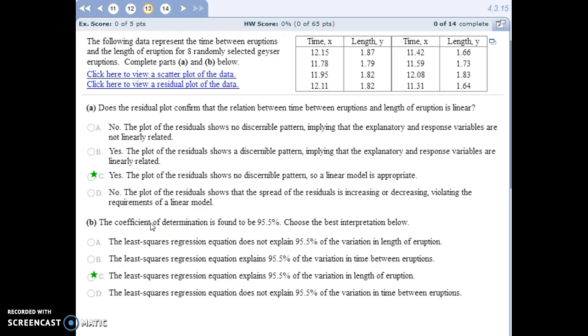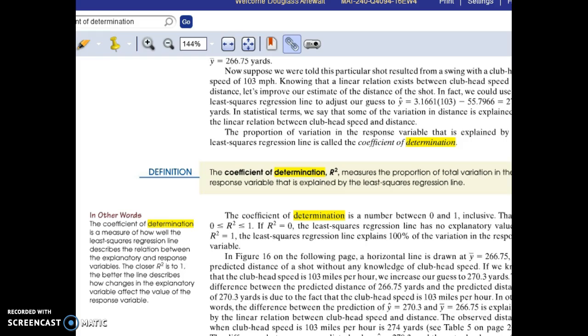Part B, it says that the coefficient of determination is found to be 95.5%, and we want to interpret that. If you look on page 221, it talks about the coefficient of determination. And it's basically a measurement of how well our least squares regression line is going to describe the relationship between the variables. And looking off here to the side, it says, the closer it is to one, the better the line describes how changes in the explanatory variable affect the value of the response variable.